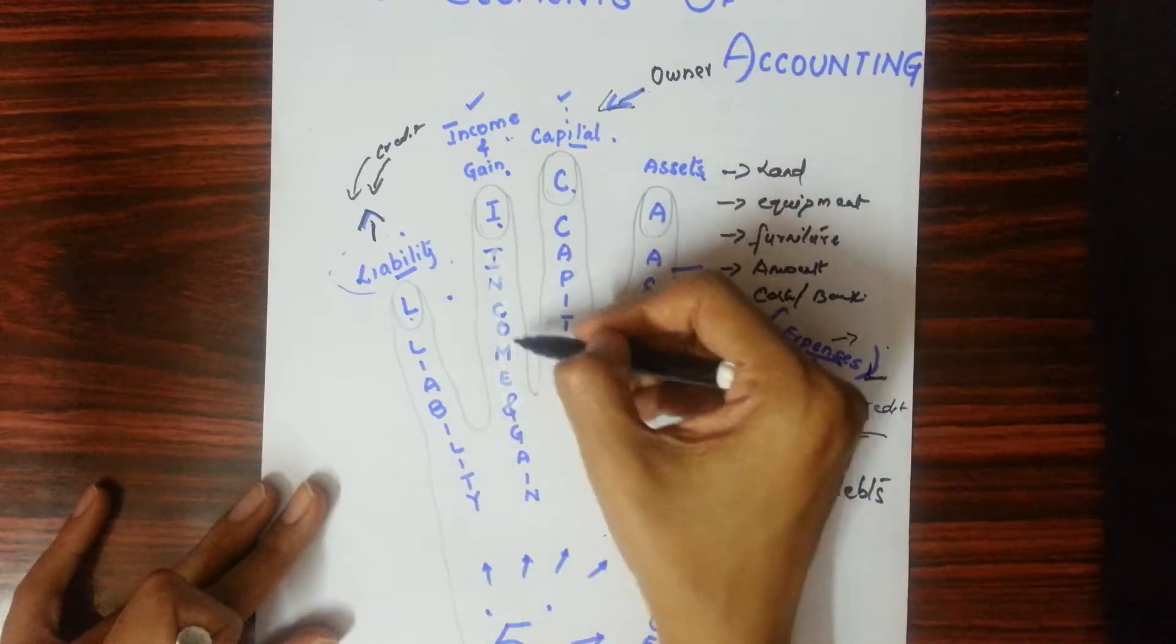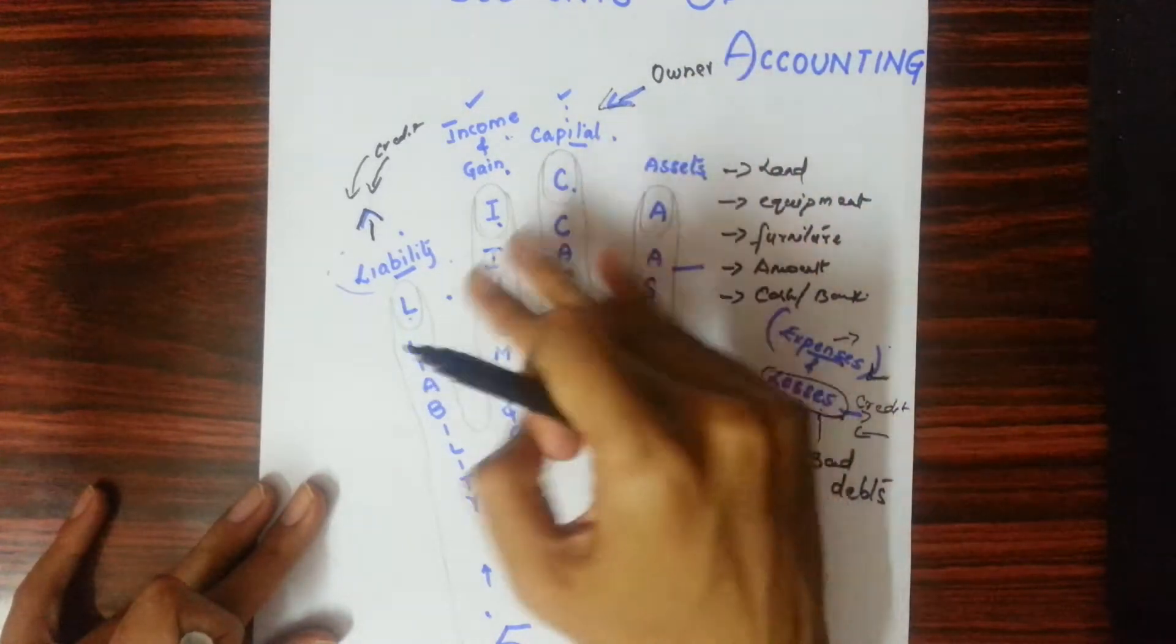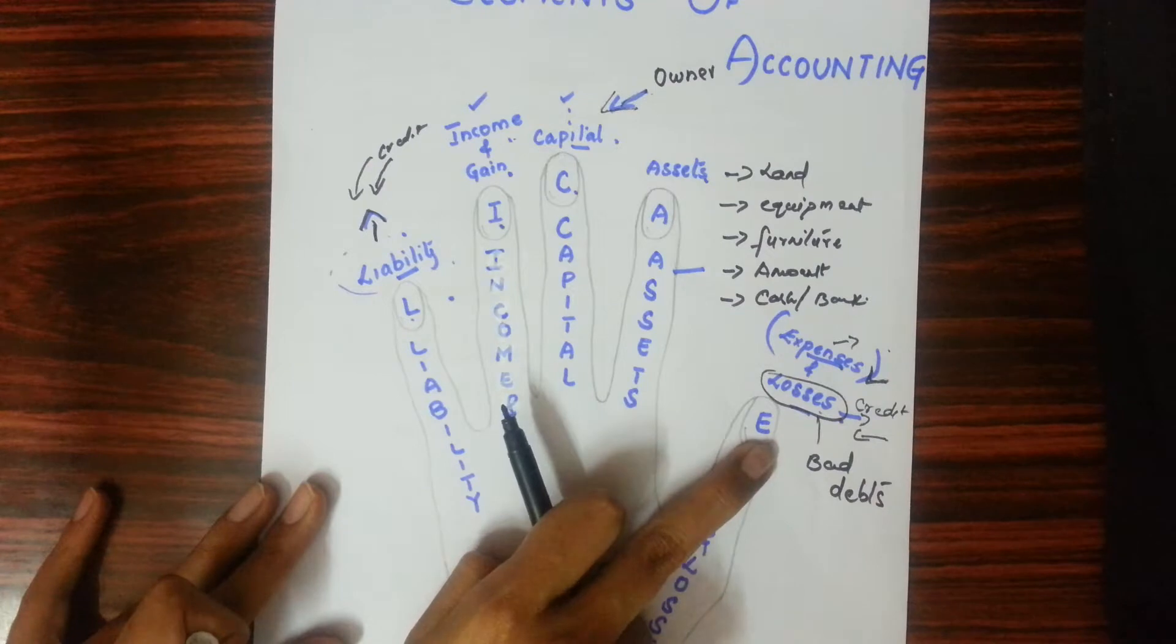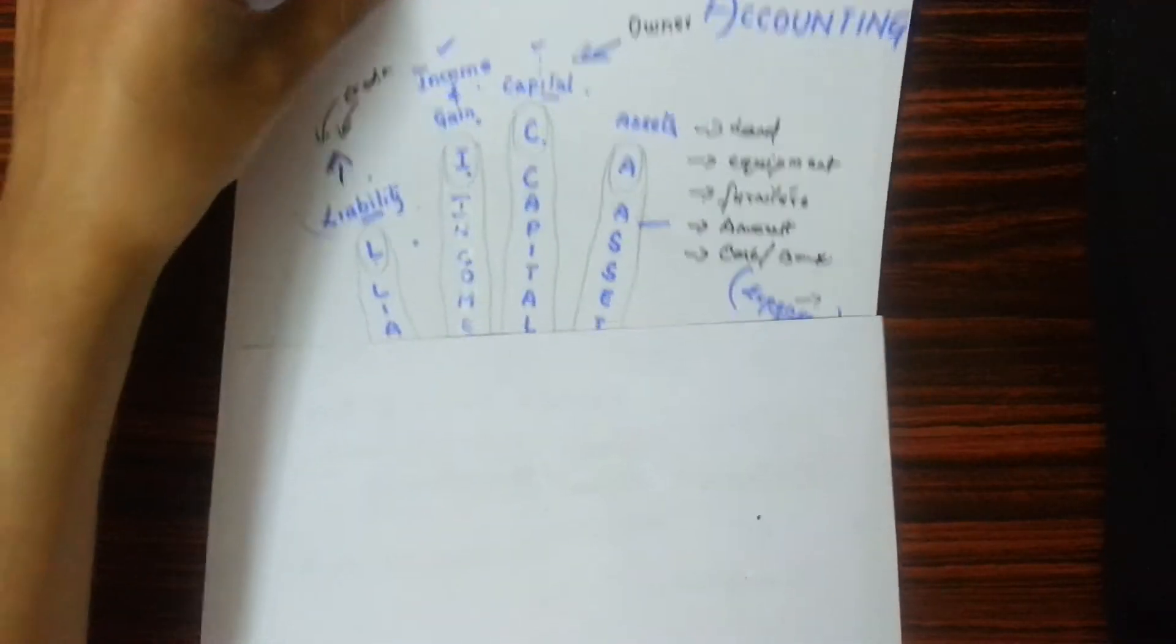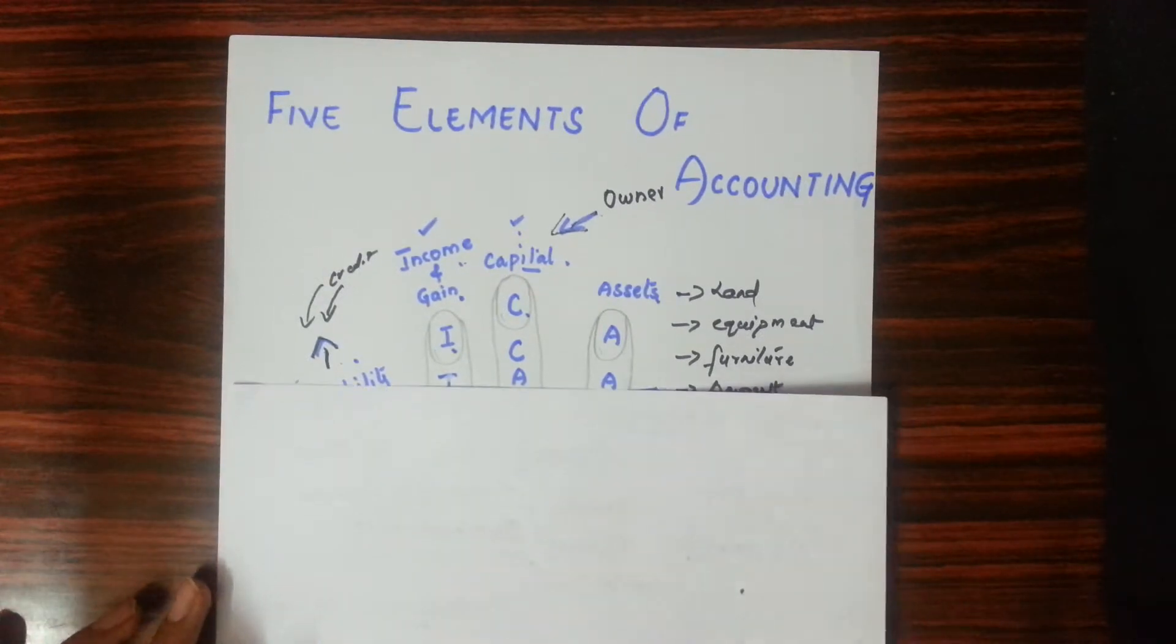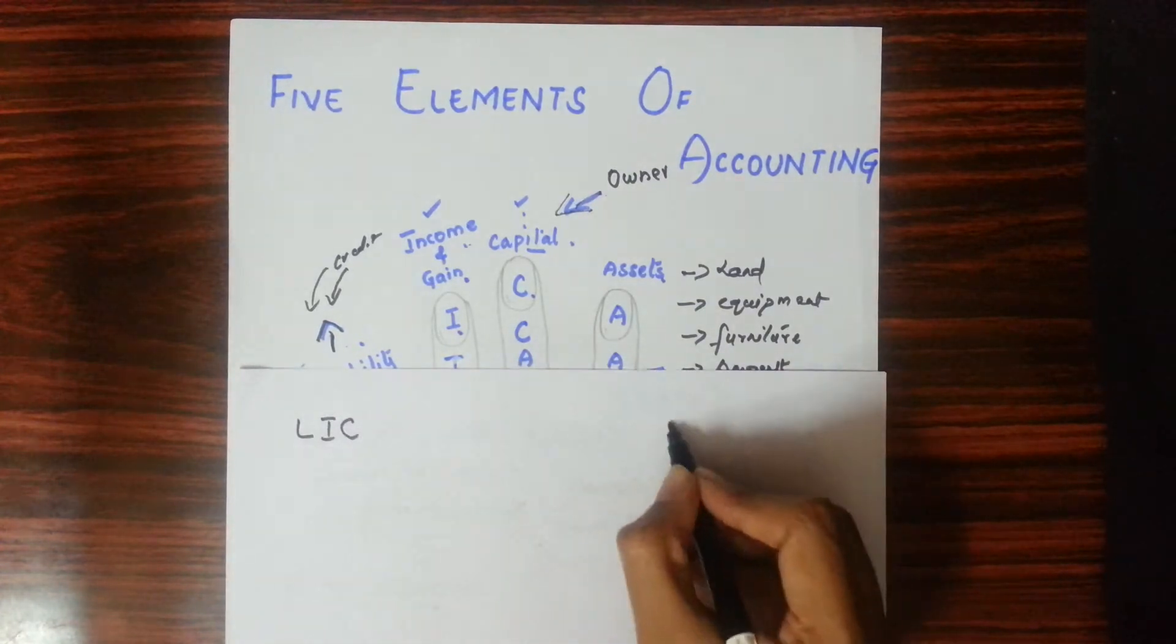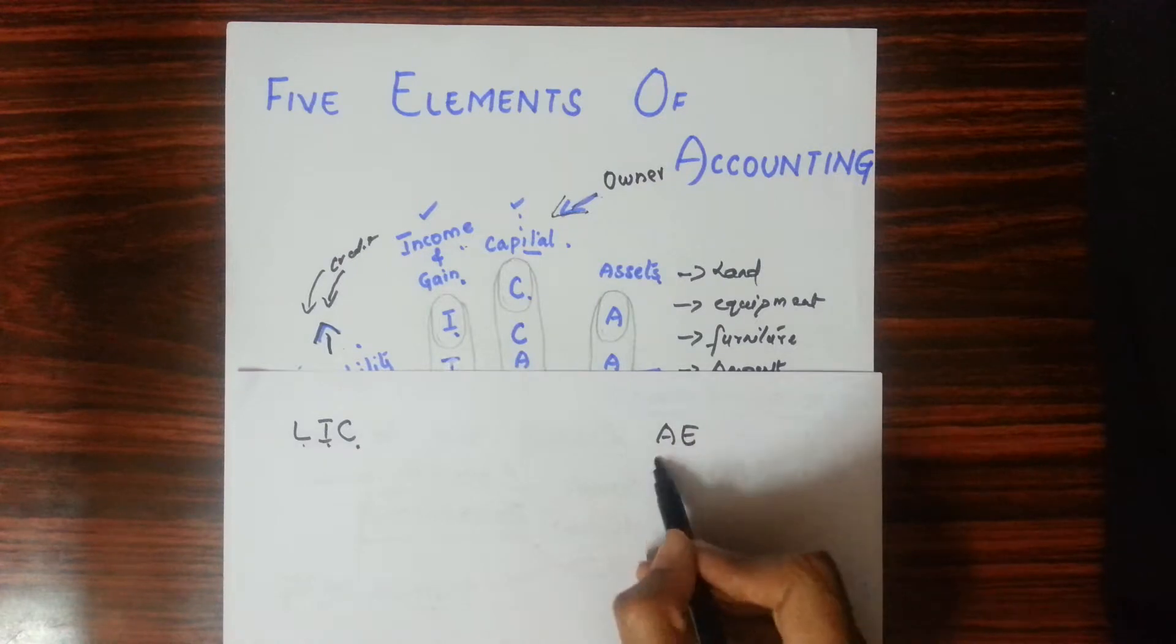First Liability L, Income and gain I, Capital C - L I C - Life Insurance Corporation of India. This is accounting's LIC. Liability, Income and gain and Capital. Then A E - remember A E well. Assets, expenses and losses. I am telling you to remember this for a reason. I will tell you now.